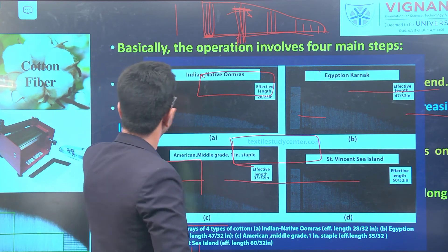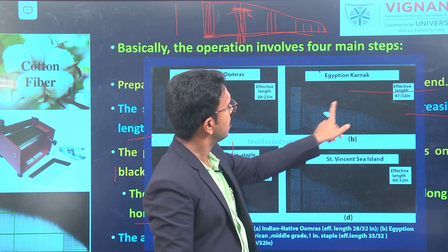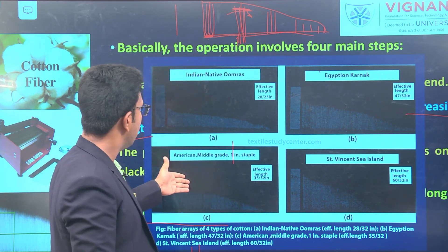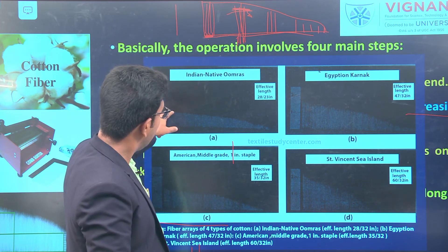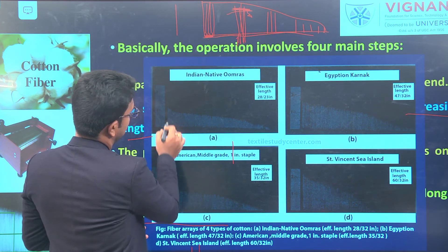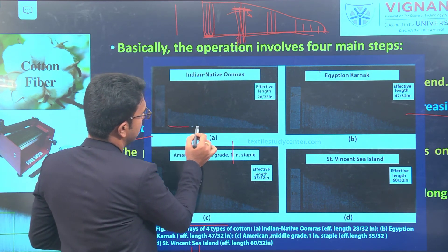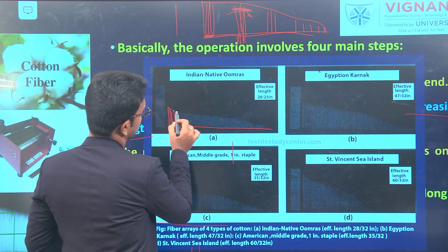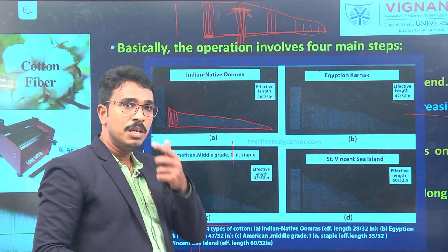You can now see examples of fiber arrays — Indian native cotton, Egyptian, American, and Saint Vincent Sea Island cotton. This is what a fiber sorter diagram looks like. The horizontal line is the baseline, and fibers are laid along it. Each time you withdraw fibers, the remaining ones are shorter, so you get this characteristic tapered sorter diagram.